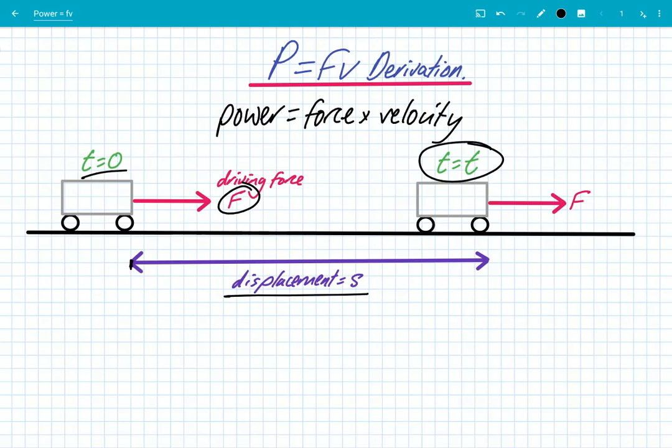The derivation of this begins with the formula for power. Power is equal to work over time, because power is the rate at which work is done. Work is given by the force multiplied by the displacement.